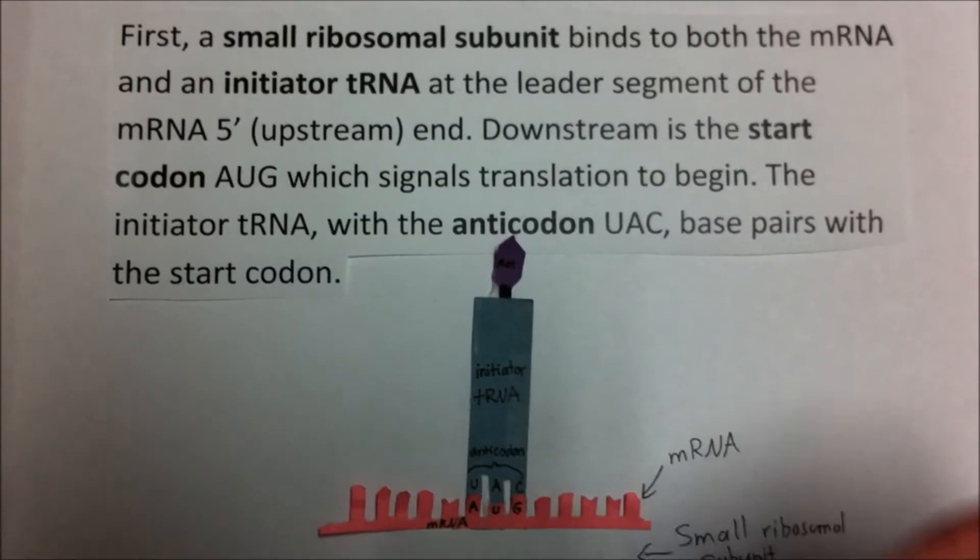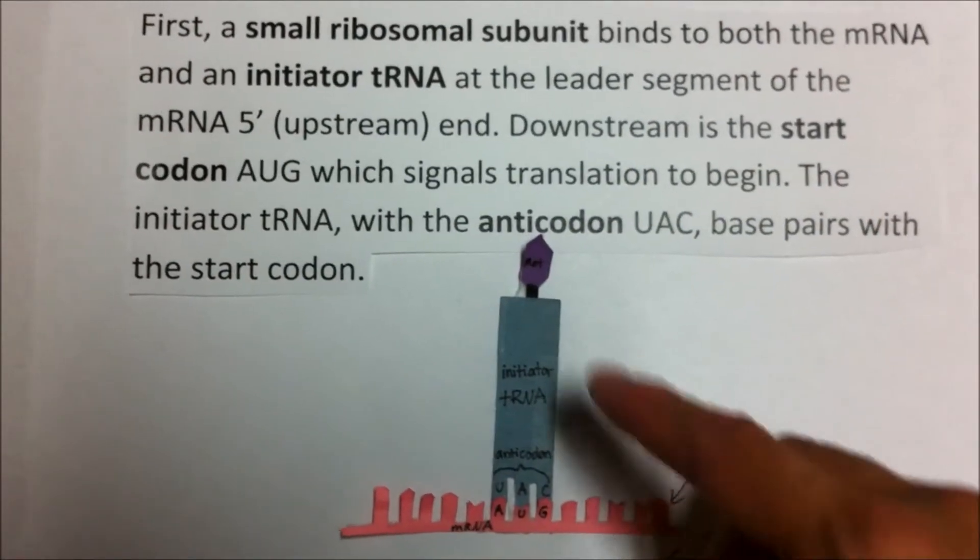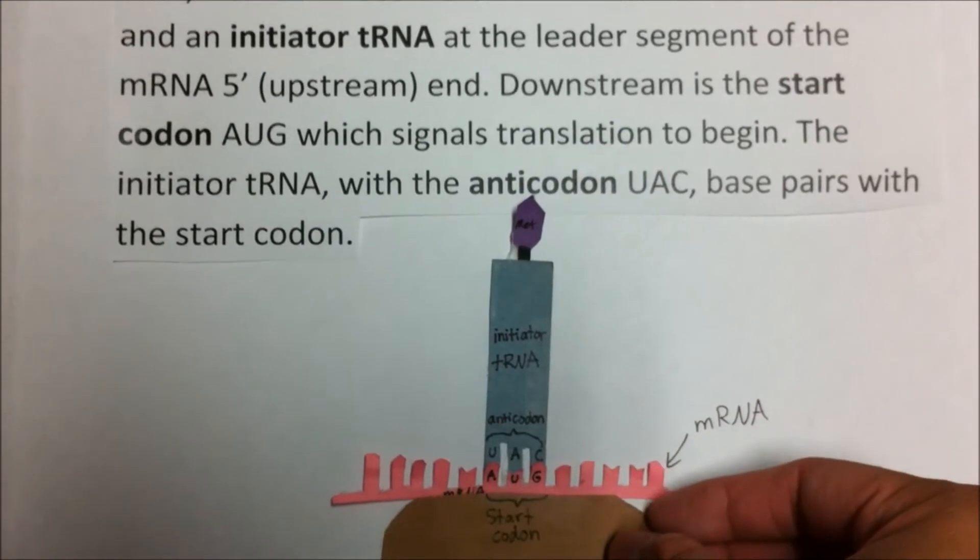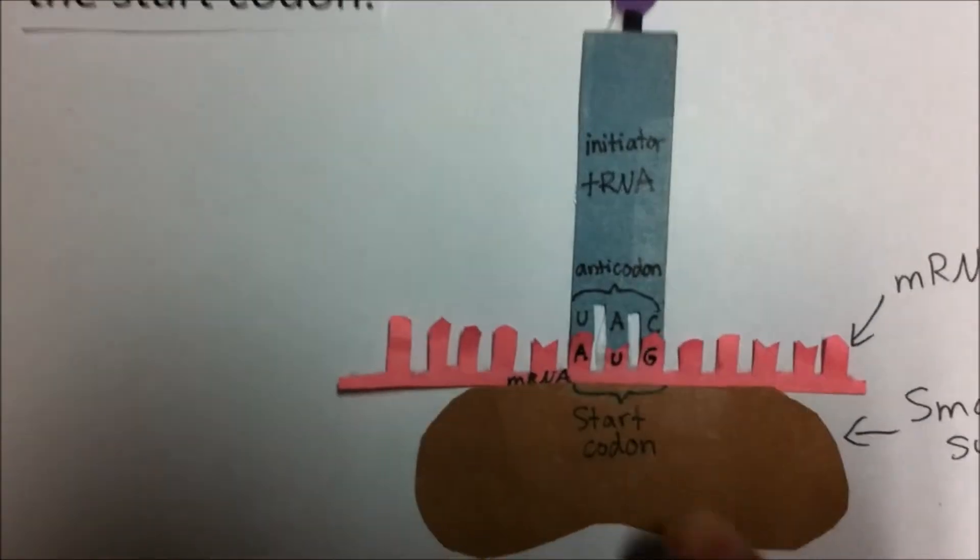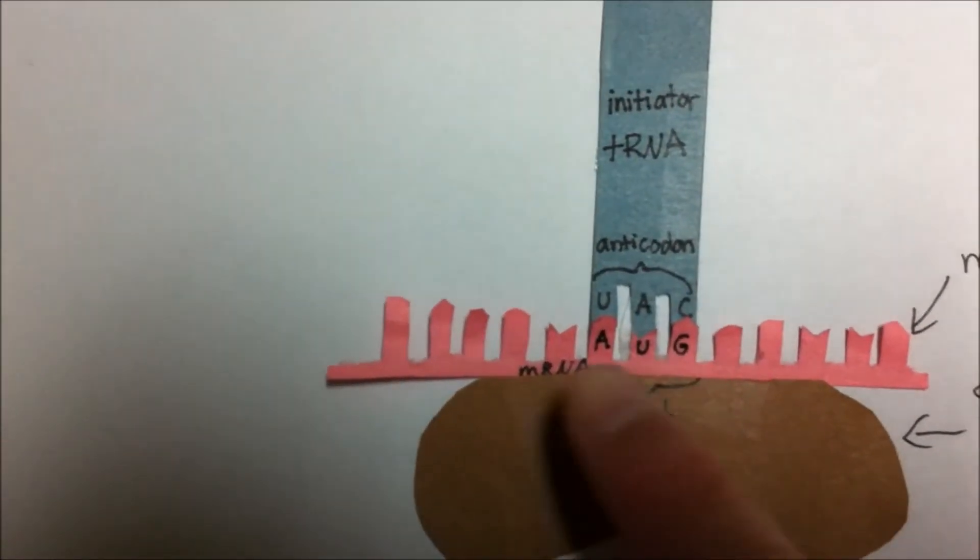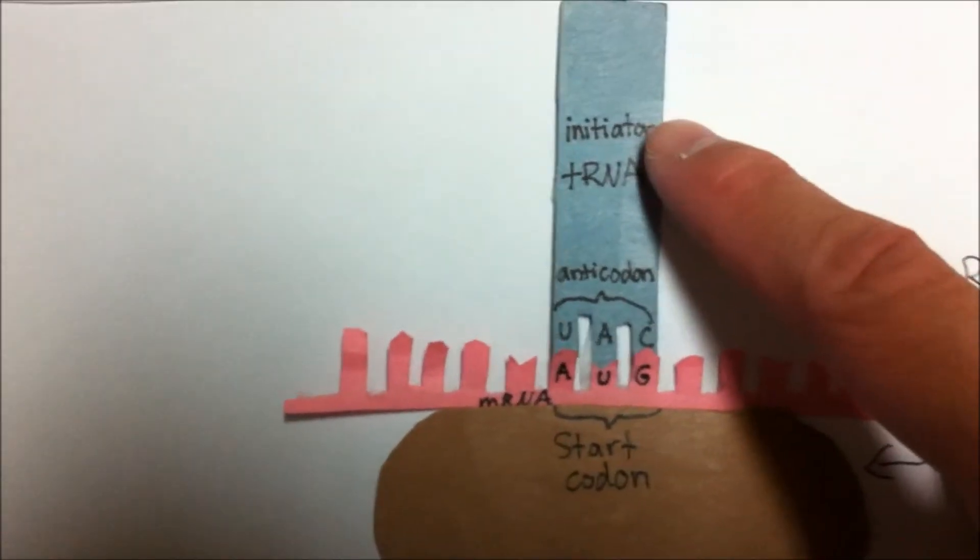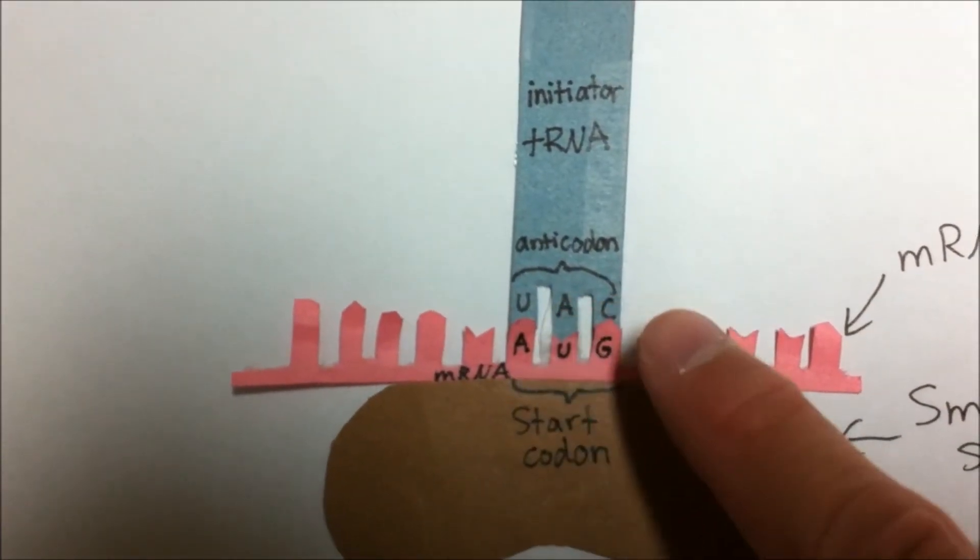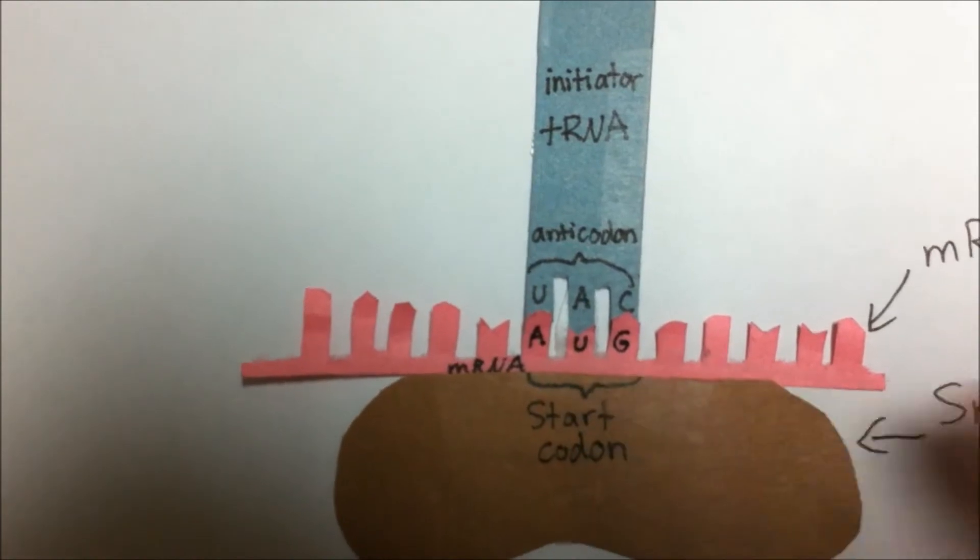First, a small ribosomal subunit binds to both the mRNA and the initiator tRNA. Downstream is the start codon AUG, which signals translation to begin. The initiator tRNA with the anticodon UAC base pairs with the start codon.